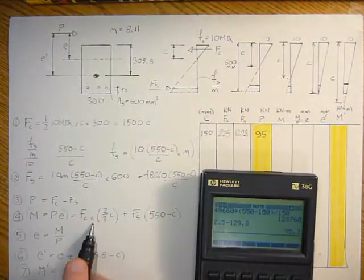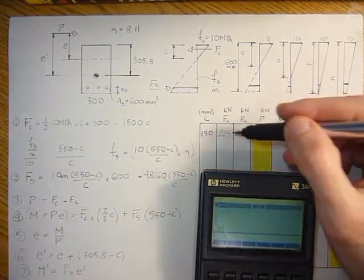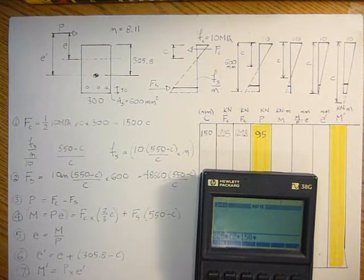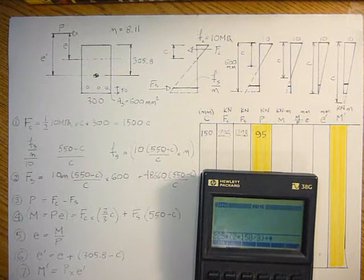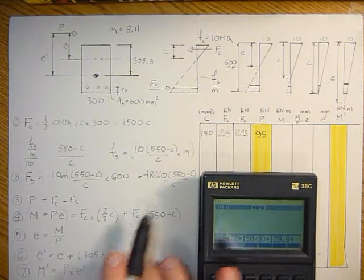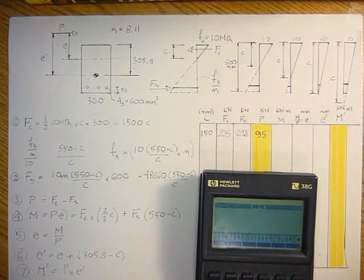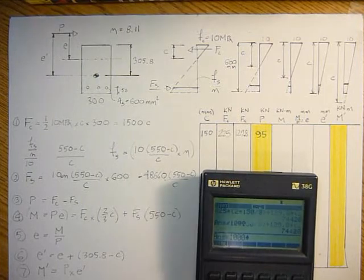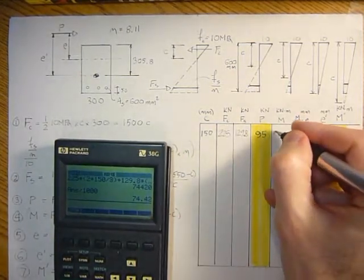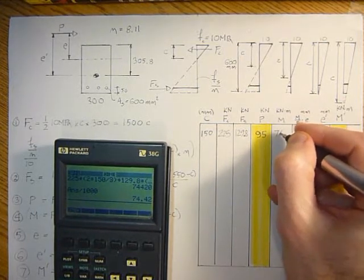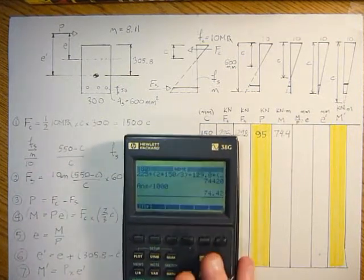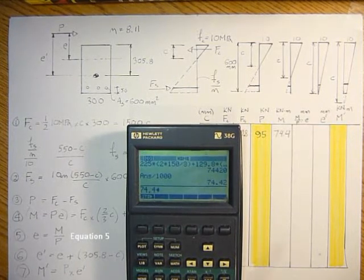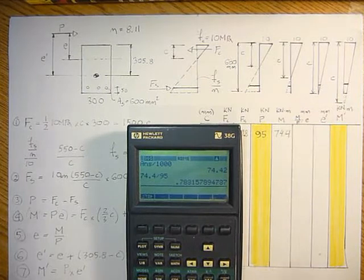And then the moment from this equation here is force in the concrete, 225 times two-thirds C, 2 times 150 divided by 3, plus force in the steel, 129.8 times 550 minus C, 550 minus 150 for C, and divide this by 1000 to put it in kilonewtons meters. So that's 74.4 kilonewtons meters. And the E value would be M divided by P from equation 5: 74.4 divided by 95 gives me 783 millimeters.